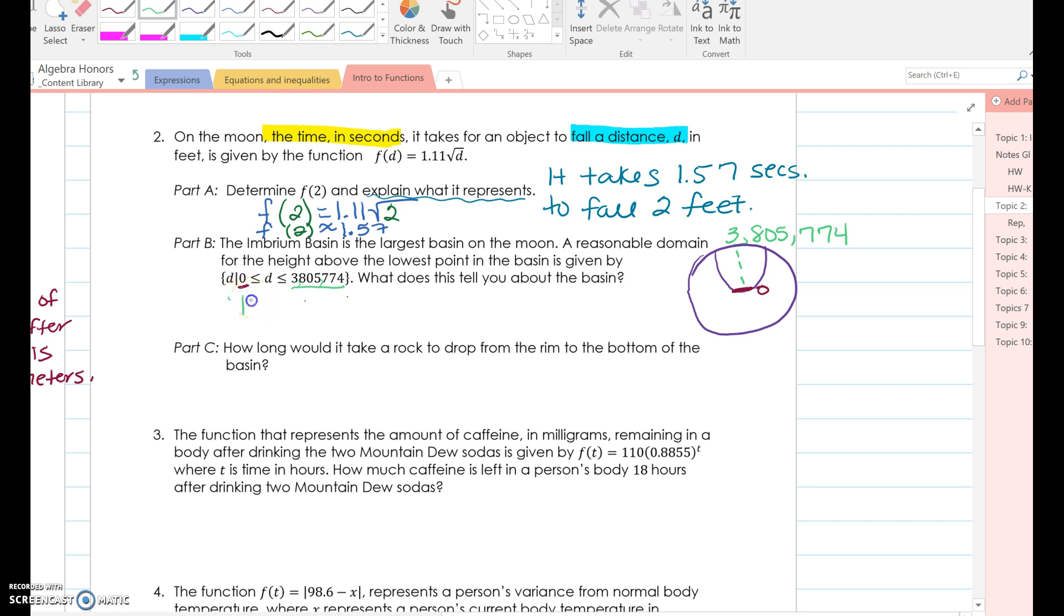Now, next it asks us, how long would it take a rock to drop from the rim? So from up top to the bottom of the basin. Hmm. Well, what do I have here? What information was given? The distance. It's 3,805,774 feet. Craziness. So we're going to plug that in for the d, for the distance. So f of 3,805,000, oh yeah, this is a whole lot of numbers, equals 1 and 11 hundredths times the square root of 3,805,774. Crazy.